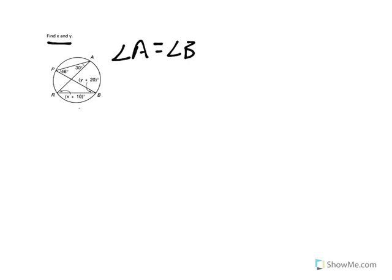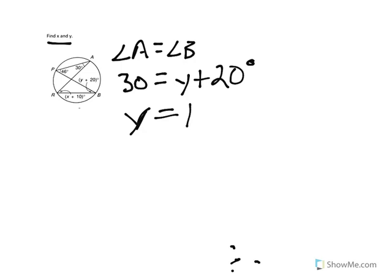So that tells us then that 30 degrees for angle A is equal to Y plus 20 degrees. Make sure that's degrees. So therefore, Y is going to equal, subtracting 20 from both sides, Y is equal to 10.